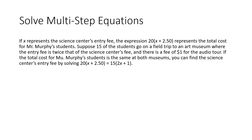the expression 20(X + 2.50) represents the total cost for Mr. Murphy's students. Suppose 15 of the students go on a field trip to an art museum where the entry fee is twice that of the science center's fee and there is a fee of one dollar for the audio tour. If the total cost for Mr. Murphy's students is the same at both museums, we can find the science center's entry fee by solving these two equations set equal to each other.